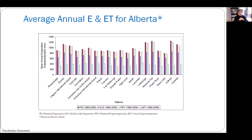As a department, we estimate evaporation and evapotranspiration at 20 different stations in Alberta. You can see the station names on the x-axis and four types of bar chart: potential evaporation, shallow lake evaporation, potential evapotranspiration, and actual evapotranspiration. The numbers vary from station to station — further south the numbers are higher, further north they are lower. Comparing the four types, the highest number is potential evaporation and the lowest is actual evapotranspiration.